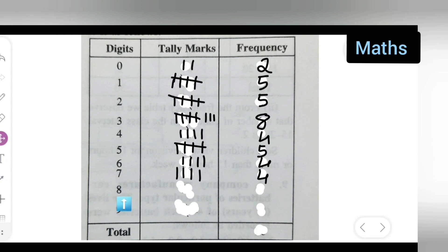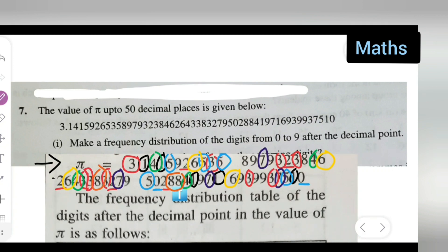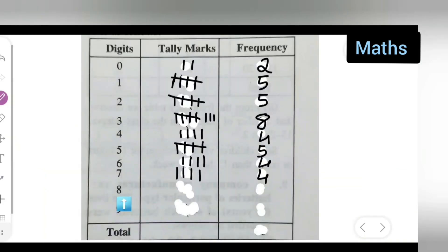Next, how many times does 8 occur? Let me count: one, two — there are two eights here — then three, four, five. So there are a total of five eights. Write down one, two, three, four, five — frequency is five.